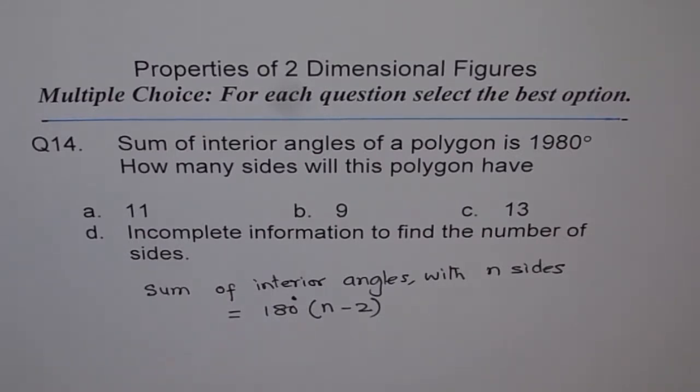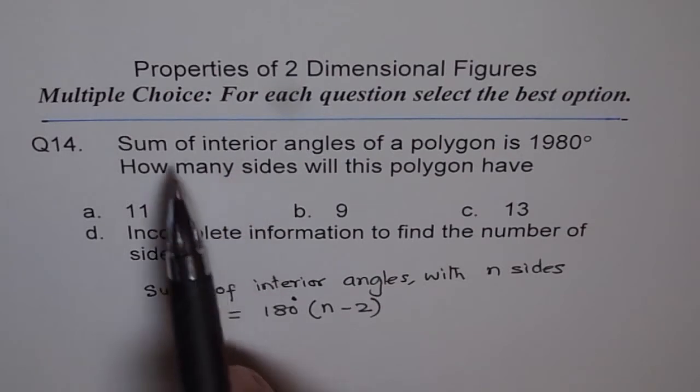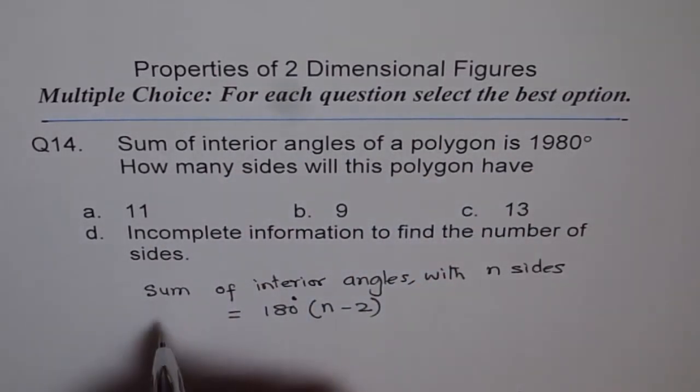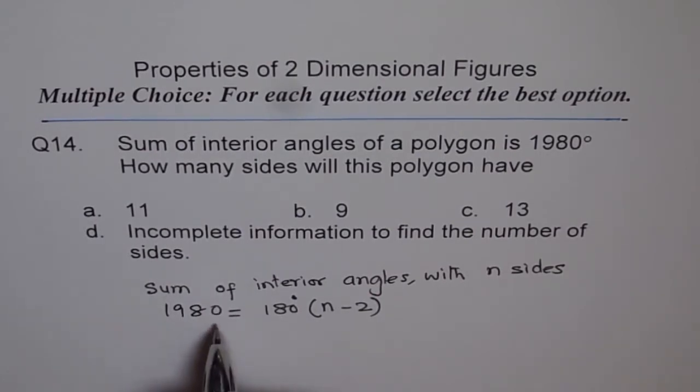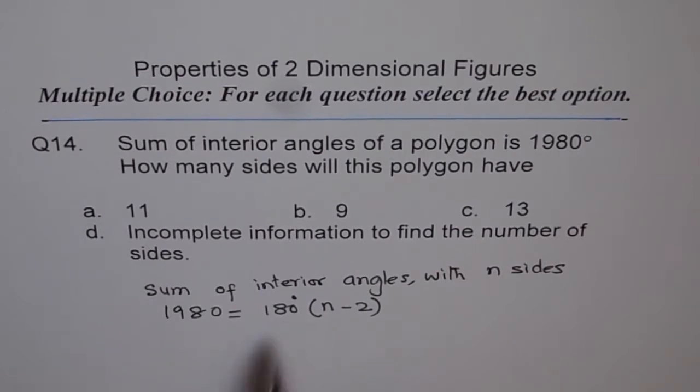In this question, we know sum of interior angles of a polygon is 1980. So 1980 equals 180 times (n - 2). Now we need to solve this.